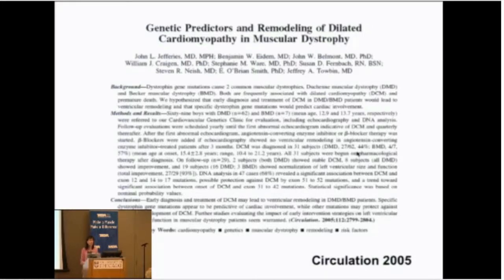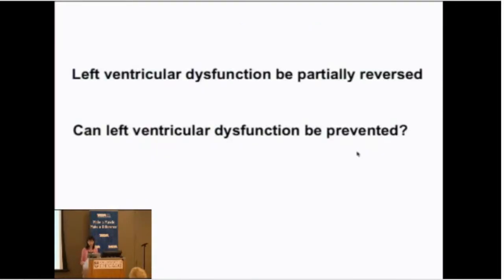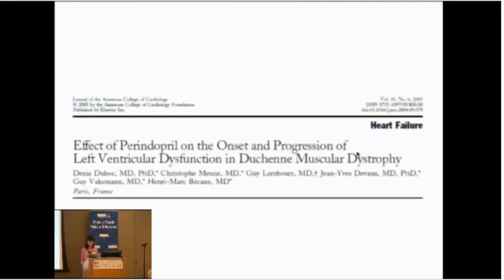But ideally we really want to start these medications before the heart gets bad — there's no point in letting the heart deteriorate. That raised the question: if you can partially reverse left ventricular dysfunction, can you actually prevent it by starting medications early? A trial done in France, led by Dennis Dubuck's group, asked that question in Duchenne patients. We more or less have to assume the same is true for Becker patients, because that study hasn't been done yet. The idea was: if we start ACE inhibitor before the heart gets bad, can we slow the decline?